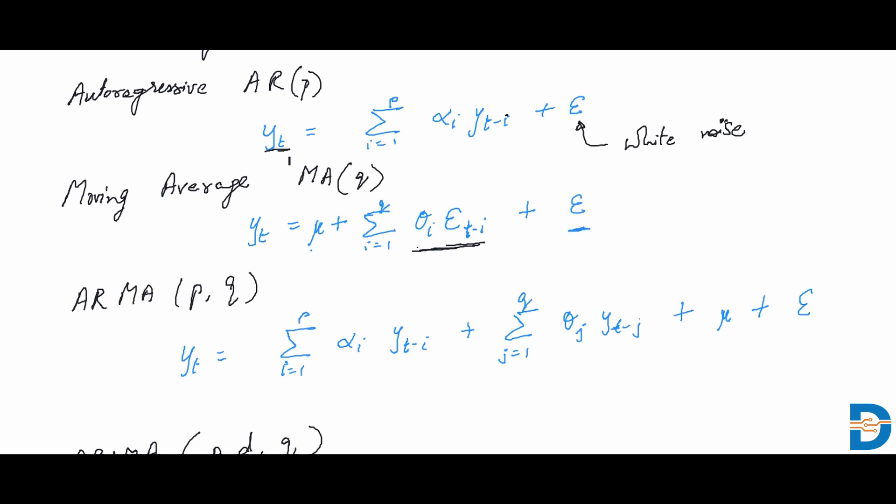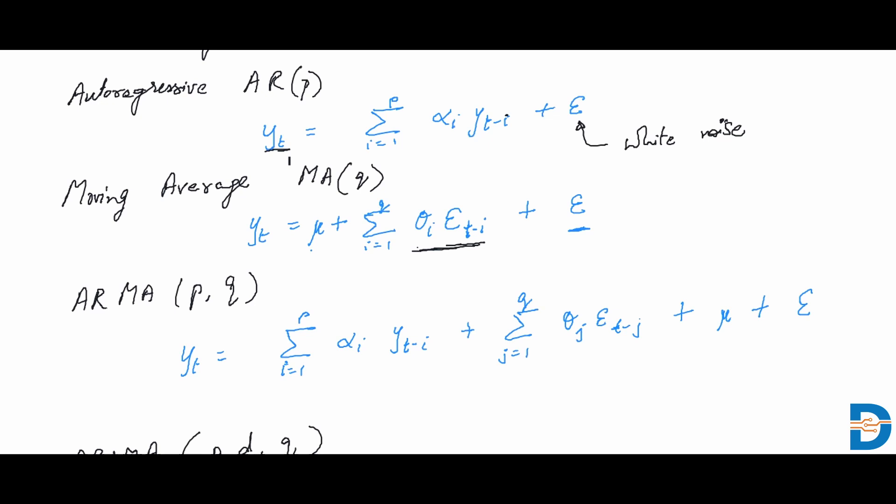We can see how the terms now get combined here, where we have the auto regressive terms for the p order and the moving average term for the q order. This should be once again epsilon over here, accounting for the moving average on the past residuals. And mu would be in some sense a constant, probably we can add it to the epsilon value and get one term over there.